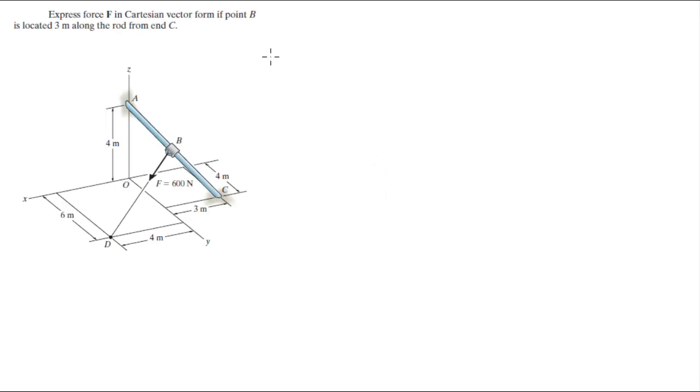Alright guys, now we're gonna do this problem that says express F in Cartesian vector form from point B to point C, as if B was 3 meters from point C. In other words, from here to here is 3 meters. It's not at the halfway point like the problem we did before.